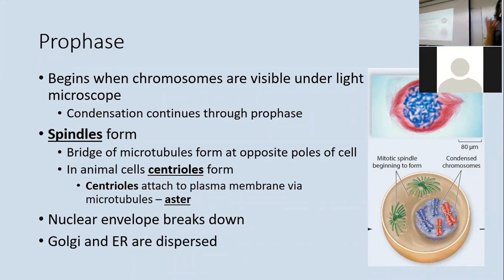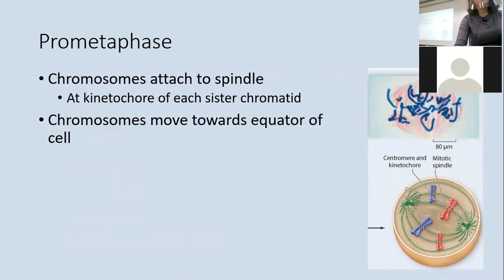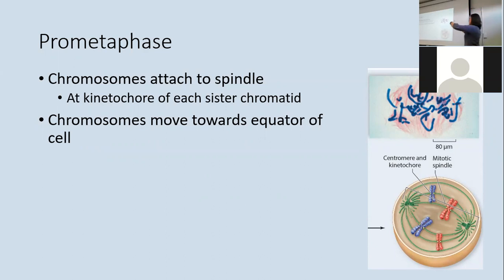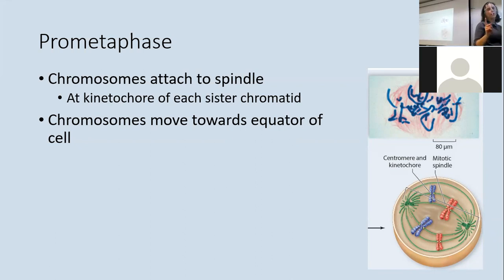In prometaphase, the spindles start attaching to the chromosomes at the kinetochores. Each chromosome has two copies joined at the centromere, with a kinetochore handle on each copy. One spindle's microtubule attaches to one side and the other spindle's microtubule attaches to the other side, ensuring that one copy of each chromosome ends up in each new cell.